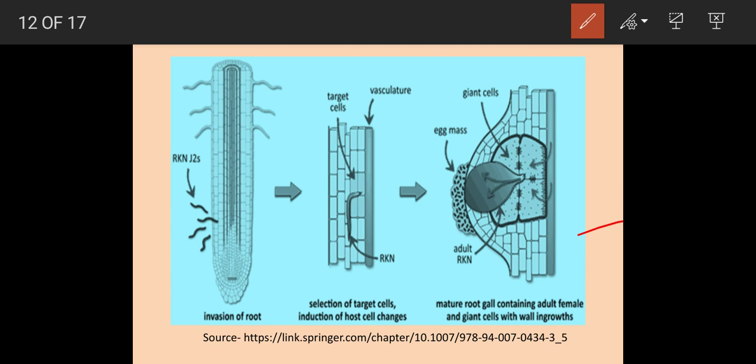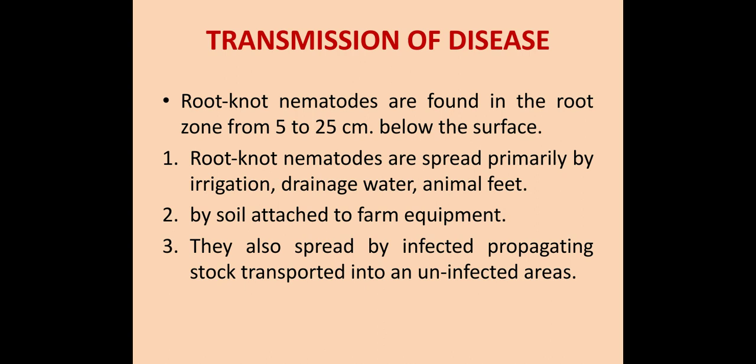Transmission of disease: Root knot nematodes are found in the root zone from 5 to 25 cm below the surface. They spread primarily by irrigation, drainage water, and by animal feed. They also spread by soil attached to farm equipment and through infected propagating stock transported to uninfected areas.